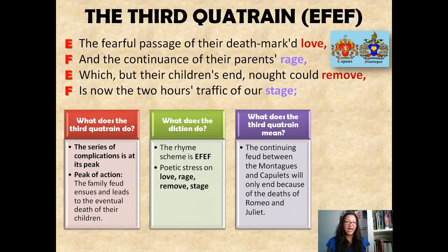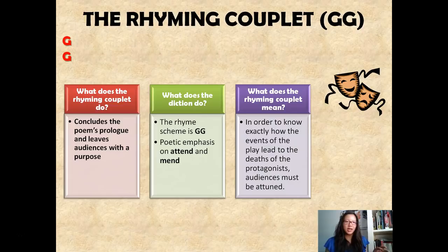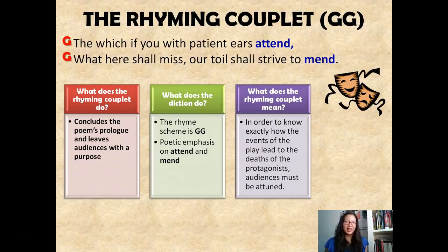Moving on to the rhyming couplet, which is meant to leave an impact on audience members — sometimes leaving them with something to think about, providing resolution or an answer to the problem introduced in the exposition. The rhyming couplet ends with: 'The which, if you with patient ears attend, / What here shall miss, our toil shall strive to mend.' The poetic emphasis is on 'attend' and 'mend.' Shakespeare is cleverly saying that if you listen and continue watching the play, you'll know exactly the details to fill in to see why Romeo and Juliet have to take their lives to end the feud between the Montagues and the Capulets.